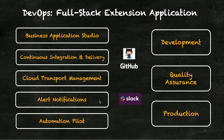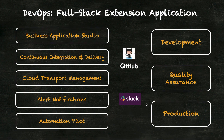We might also want to do some specific things like a smoke test once the application has been deployed to production or QA, and for that we can use Automation Pilot. These four things — continuous integration and delivery, cloud transport management, alert notifications, and automation pilot — are services available within the Business Technology Platform. For alert notifications, we're going to send them to a Slack channel.